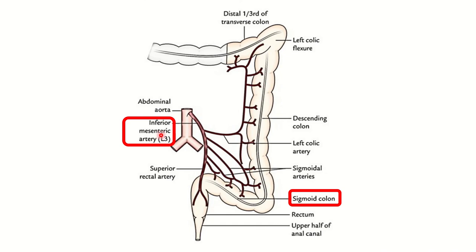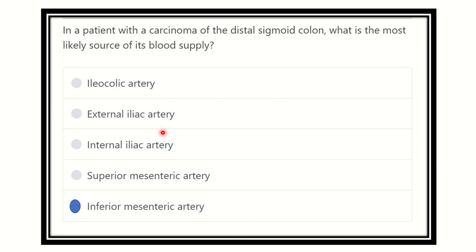This artery originates from the inferior mesenteric artery, so the sigmoid colon is supplied by the inferior mesenteric artery. The inferior mesenteric artery supplies the left one third of the transverse colon, the left colic flexure — also known as the splenic flexure — the descending colon, the sigmoid colon, the rectum, and the anal canal.